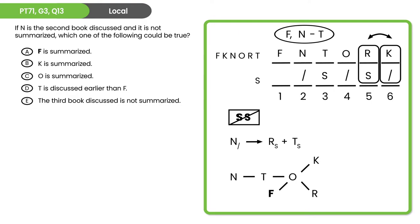The thing you haven't figured out is typically the 'could be true' answer. Here, F is summarized is possible — answer choice A. The wrong answers: K is summarized (no, K is not), O is summarized (no), T is discussed earlier than F (no, F is first and T is third), and the third book discussed is not summarized (no, T is third and is summarized). Answer choice A is correct.